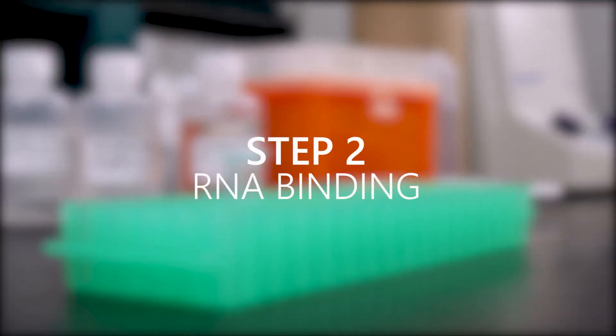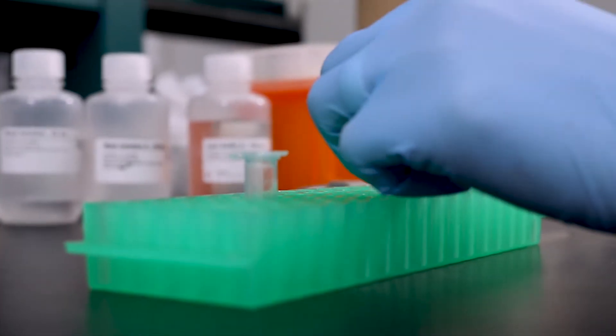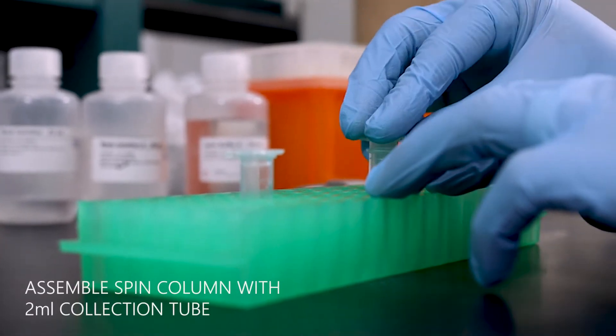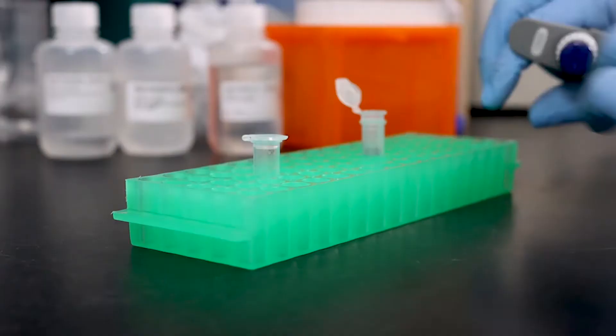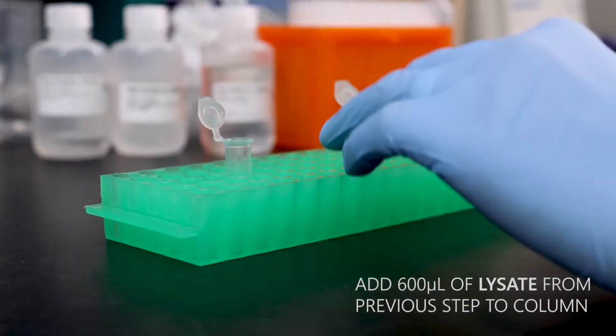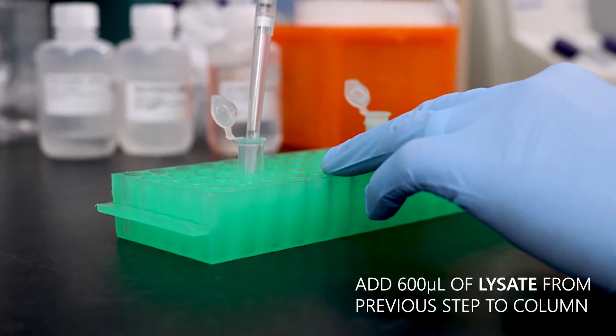Step 2. RNA Binding. Assemble the spin column with a 2ml collection tube. Add 600 microliters of lysate to the spin column.